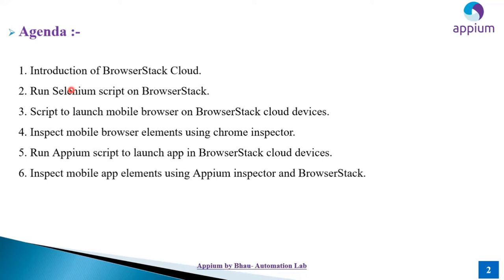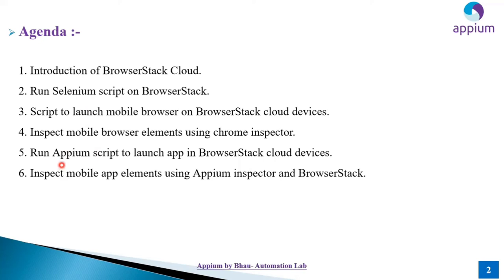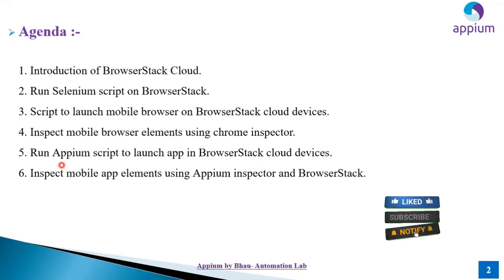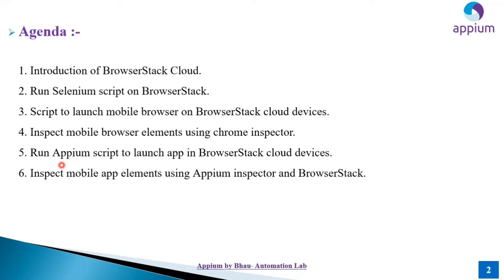In this session, which is very important, we are working with app automation. We will deploy our build on BrowserStack cloud and inspect the elements of the app on BrowserStack cloud. This is a tricky thing — we need to deploy our build and for a 30-day time period, we get one access key to work with the BrowserStack automation build.